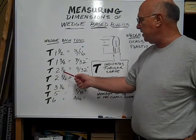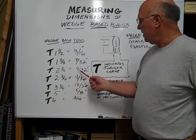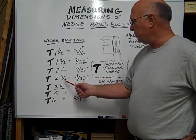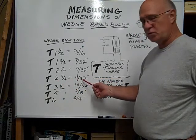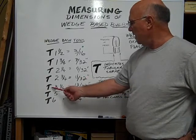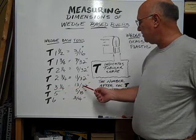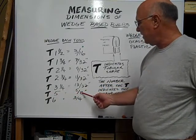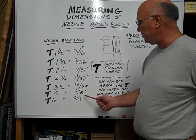A T two and a quarter is nine thirty-seconds. A T two and three quarters is equivalent to eleven thirty-seconds of an inch. A T three and a quarter is thirteen thirty-seconds. A T five is equivalent to five eighths of an inch.